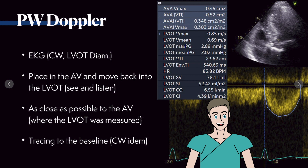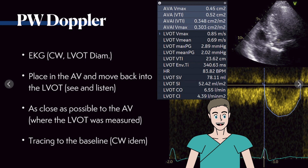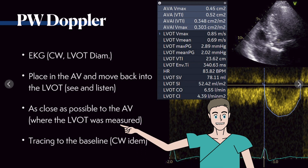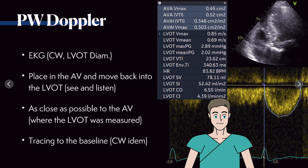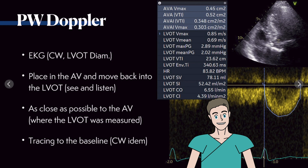Also use ECG guidance for the continuous wave Doppler, for the LVOT diameter, and also for the pulsed wave Doppler. As mentioned, you should measure as close as possible to the aortic valve, but really within the LVOT. And you should trace everything from and to the baseline, just like with the continuous wave Doppler signal.